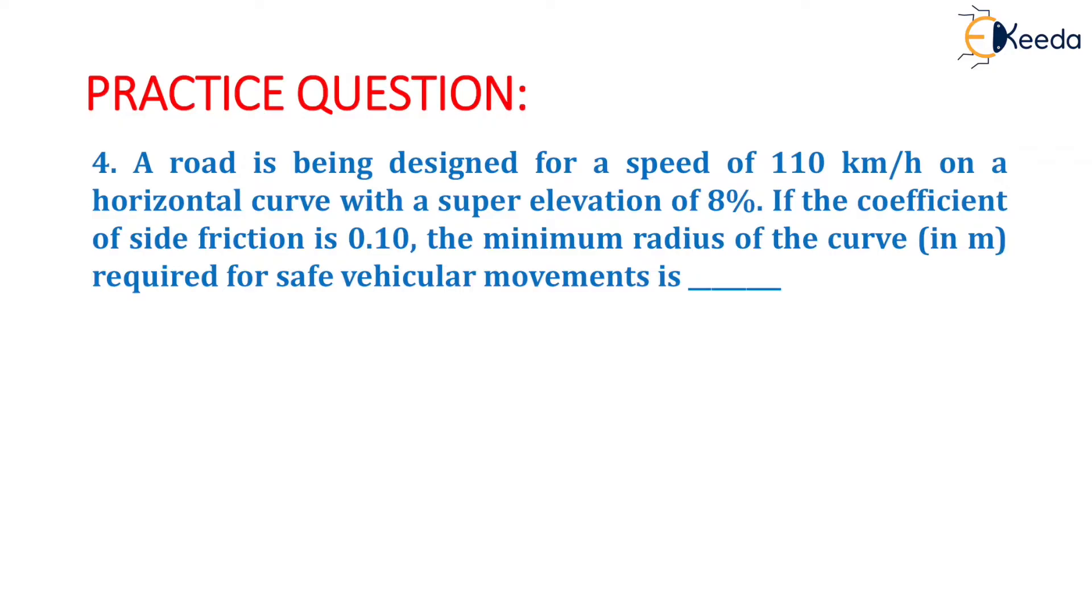The question is: A road is being designed for a speed of 110 km per hour on a horizontal curve with a super elevation of 8 percent. This means the value of V is given as 110 km per hour and super elevation, that is small e, is given as 8 percent, that is 8 by 100.